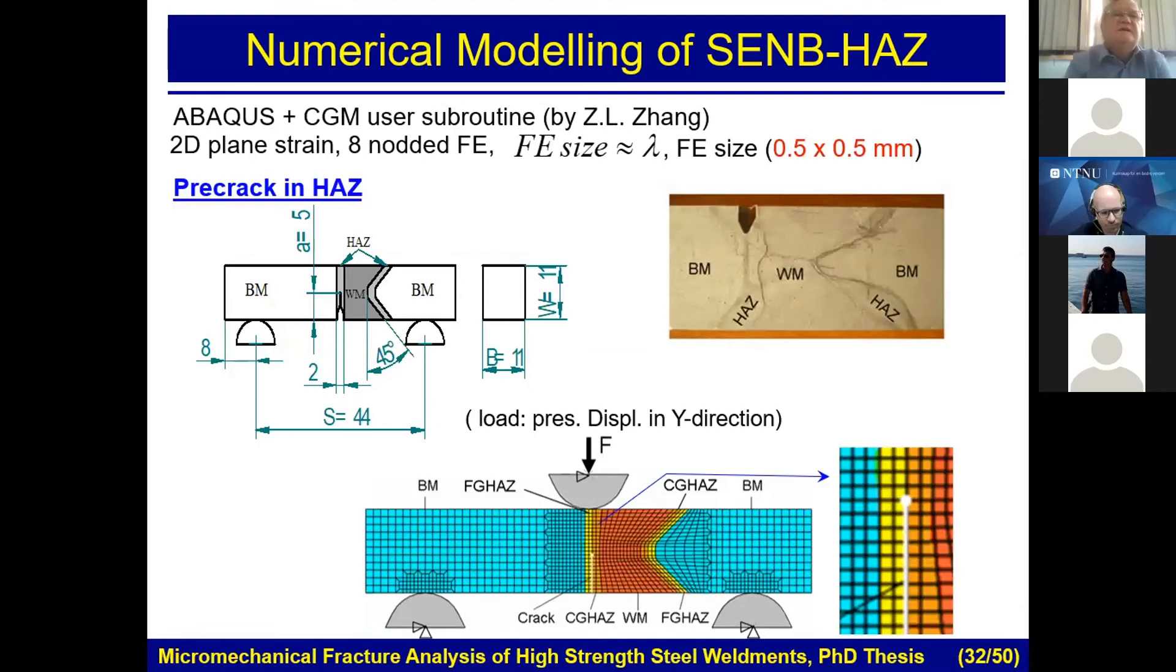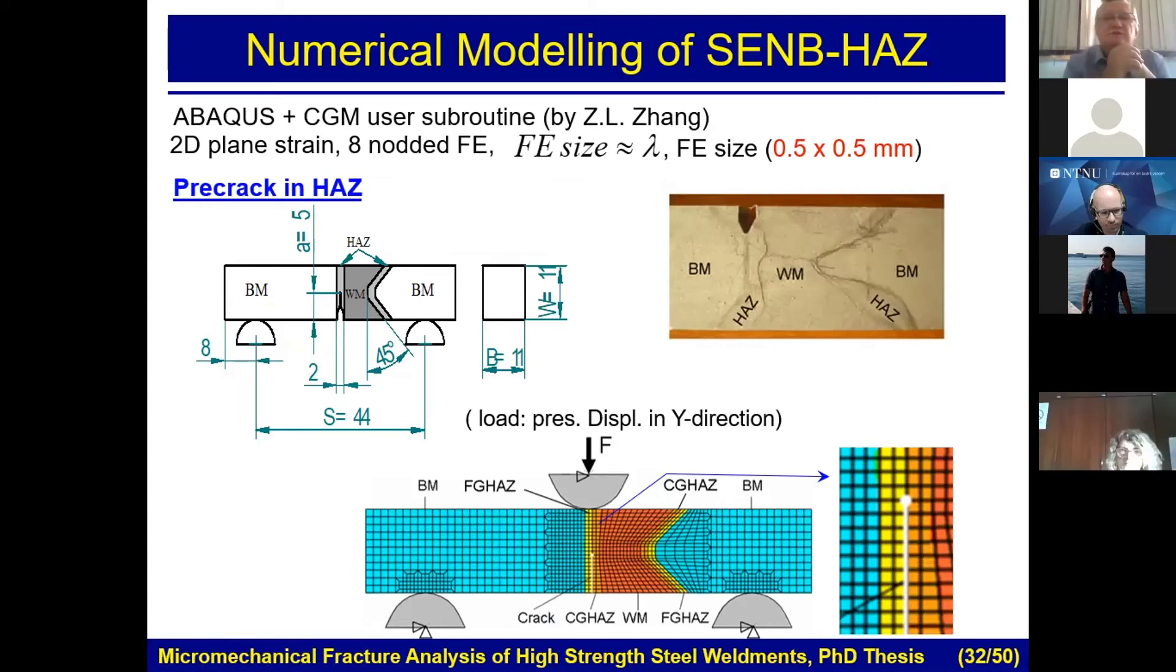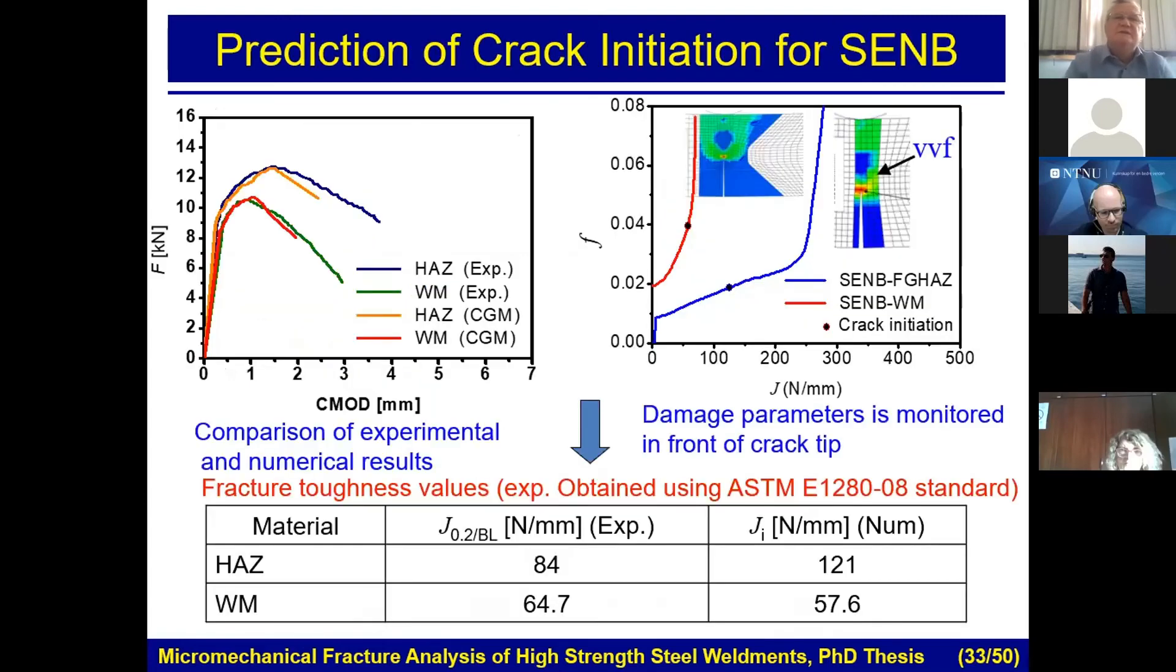And here is what was done. It was in Abaqus, and by using that subroutine I just mentioned, we simulated 2D and 3D problem. You can see here what it is about. In both cases, it is a welded joint. And we, in both cases, also had two different crack positions, one in heat affected zone, the other in weld metal. So here you can see also some results.